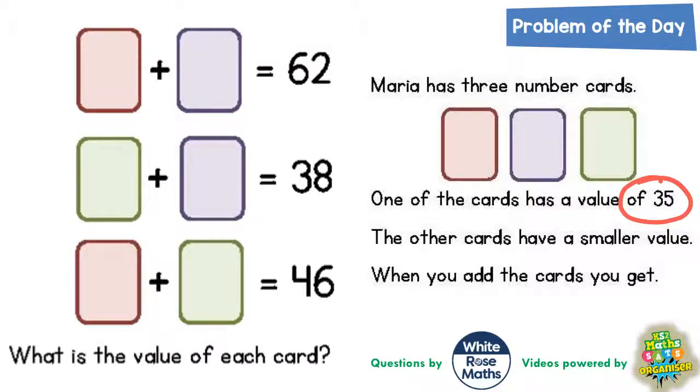When you add the cards you get each of the answers that are shown. Red plus purple is 62, green plus purple is 38, and red plus green is 46. We've got to find the value of each card.